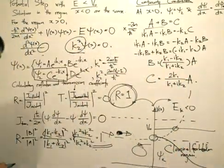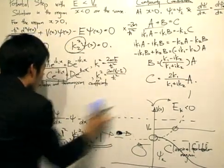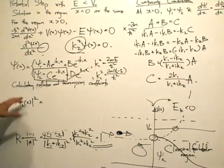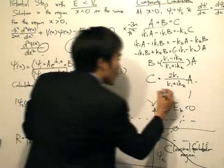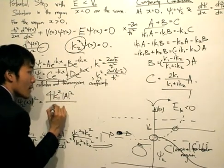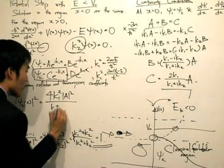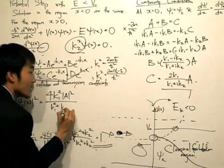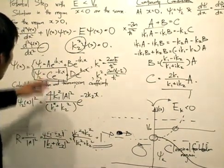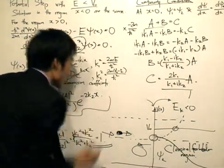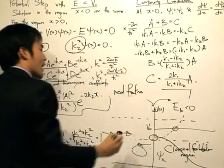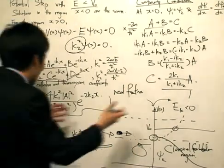To show this conclusively, we look at the probability density. We take the magnitude of psi two and square it. Since c equals 2k₁a divided by (k₁ plus ik₂), we get: 4k₁² times the magnitude of a squared, divided by (k₁² plus k₂²), times e to the minus 2k₂x. Notice that the probability density is a real function, and since it's real, we can graph it. It decays as x tends to infinity.